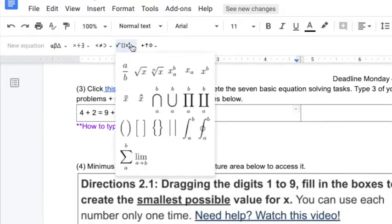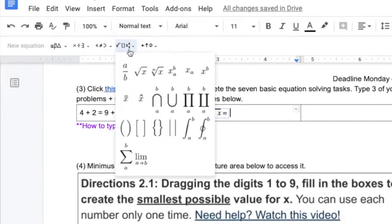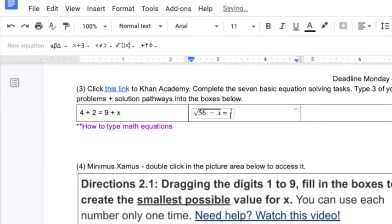So for example, if I want to say the square root of 56 minus X equals 7 over 8, I have all the symbols that I need to do that kind of stuff.